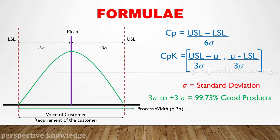The CPK value indicates process performance. Good products output — scrap is very low. So we use the process of 6 Sigma standard deviation to assess the process.